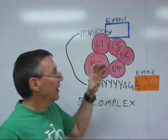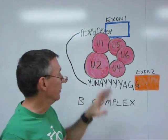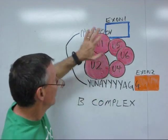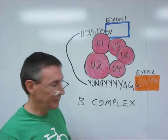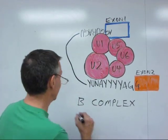The next thing that happens after the A complex is formed, three more snRNPs join, U4, U5, and U6. This complex of five snRNPs is known as the B complex. This is also what's typically referred to as the spliceosome.